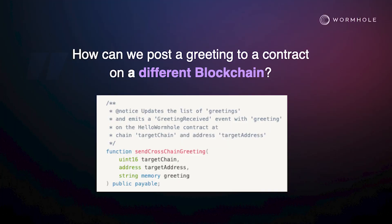Our goal is going to be to implement this function. This function is trying to do a crazy thing in blockchain. If you read the description, what we want is if a user calls this, we want to emit an event to a different blockchain entirely. This is not something you can do in normal Solidity. But this is what we're going to try to do. This is the whole goal of today's workshop.